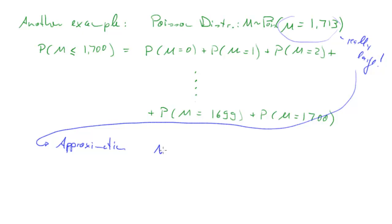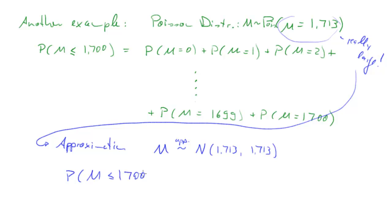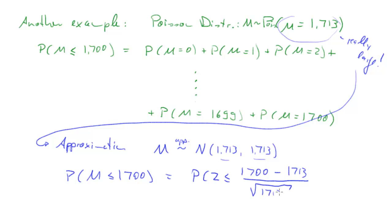It now turns out that if we have a mu that is indeed really large, we can use the approximation. We say that M is approximately distributed as a normal distribution with mean 1713 and variance 1713. That means P(M ≤ 1700) is approximately P(Z ≤ (1700 − 1713) / √1713), which can be calculated using the normal distribution table.